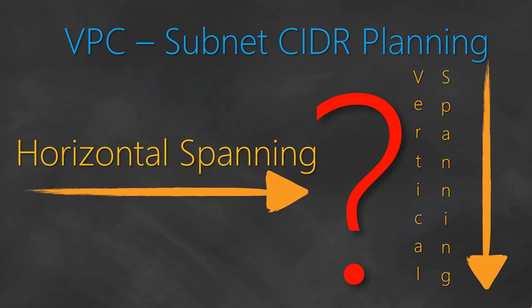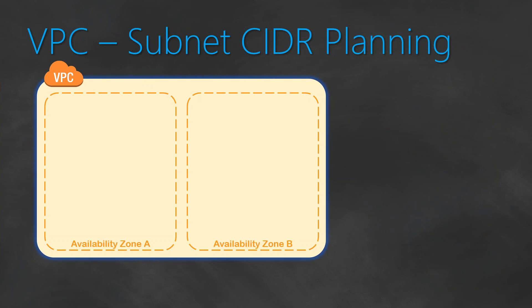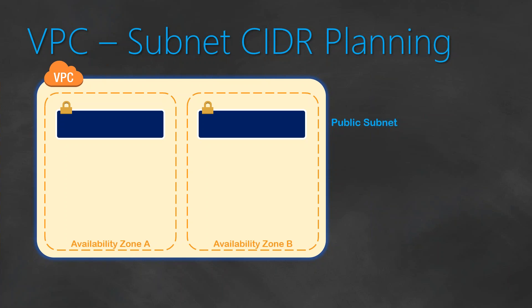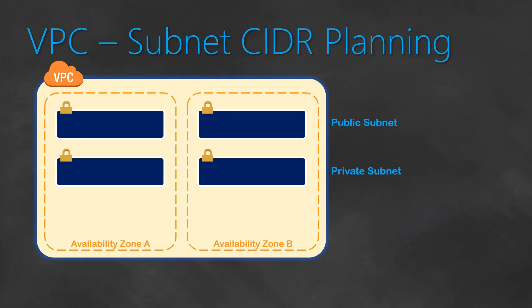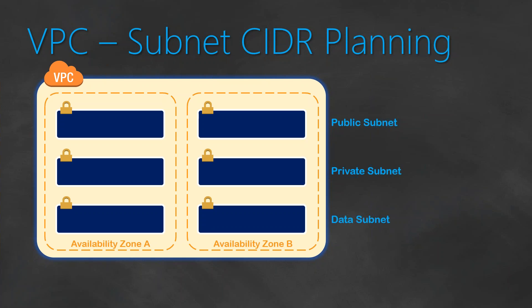When talking about a VPC, let us consider a scenario where there is a single VPC spreading across two availability zones — let's say availability zone A and B for simplicity. Here you have a public subnet across both availability zones, likewise a private subnet, and for the database layer we have a data subnet.